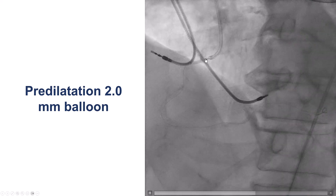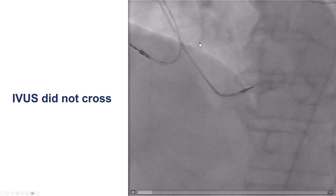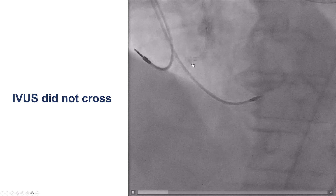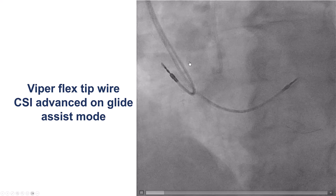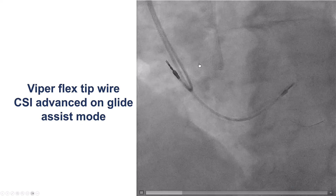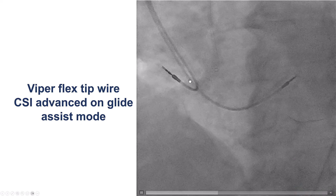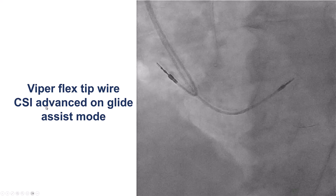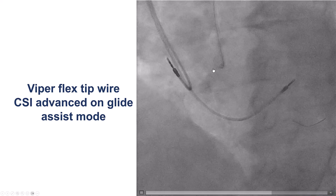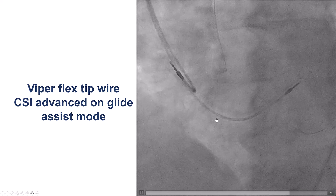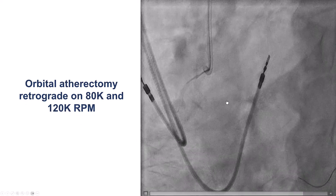After doing that, we pre-dilated with a small balloon, but couldn't deliver an IVUS catheter because of the ostial disease with calcification. So we decided to use atherectomy. We advanced the microcatheter again and exchanged the wiggle wire for a ViperWire Advance tip guide wire, with the goal of performing atherectomy. This is also a fairly supportive wire.